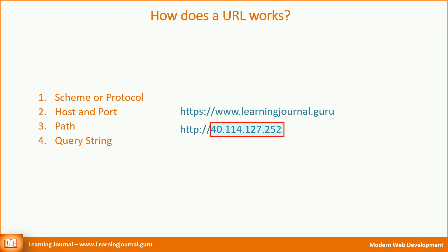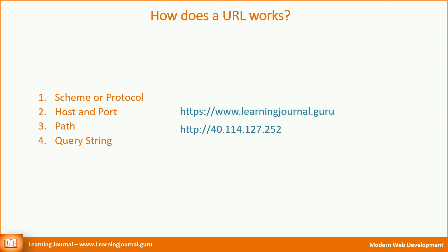The second part is the host and the port number. The host is either an IP address or a domain name. The port is optional because they are fixed for a protocol. For example, HTTPS uses port 443 and HTTP uses port 80. So we leave the port number for a typical web page URL. However, sometimes when we configure a different port for a website, you must use the port number in the URL. For now, let's assume we are using the default port number, and hence they are optional.